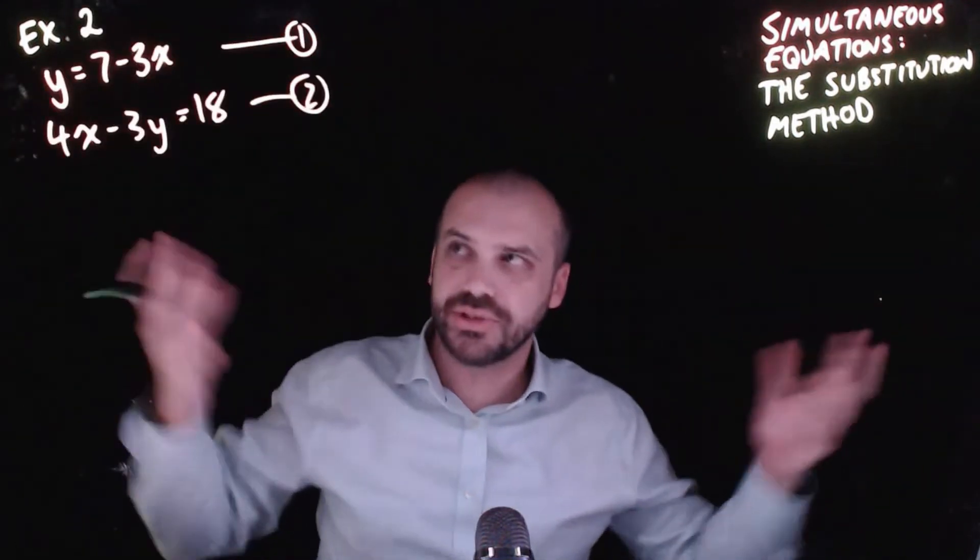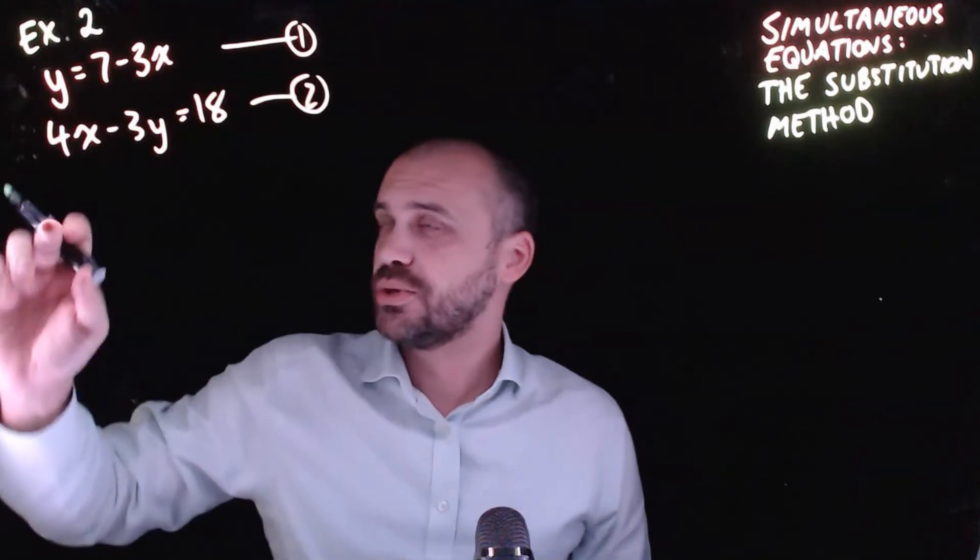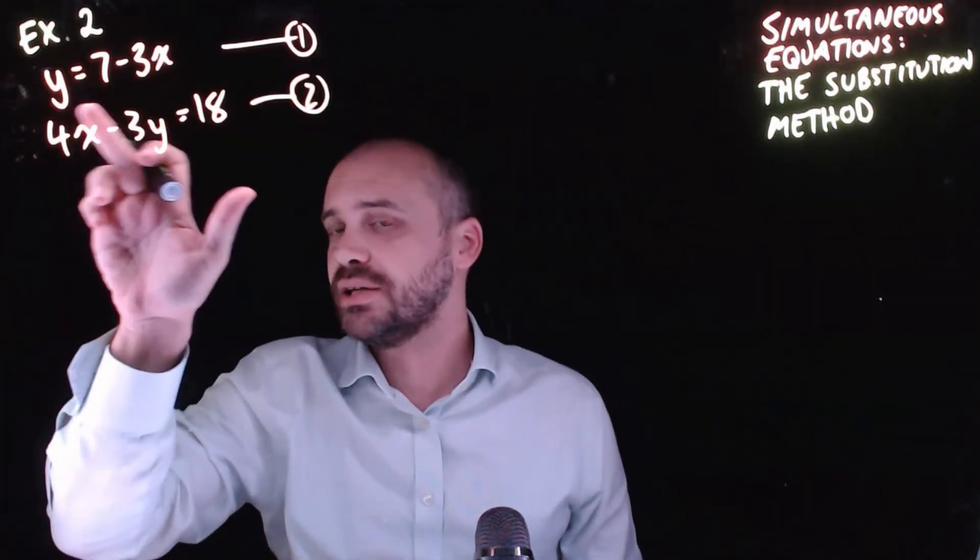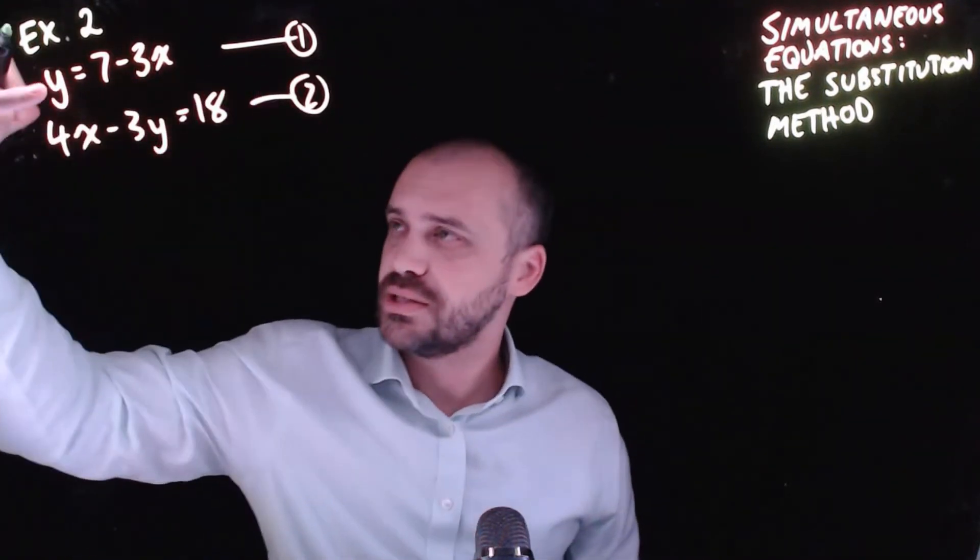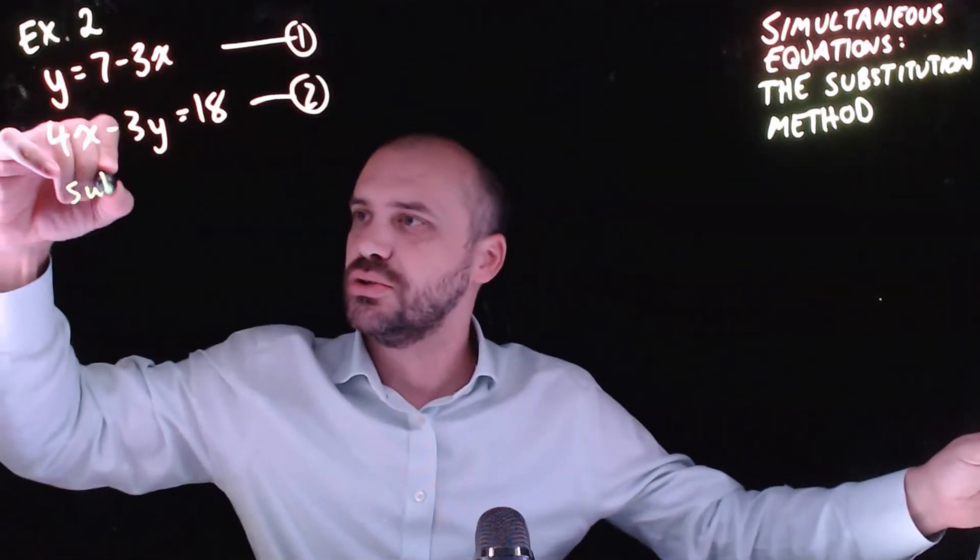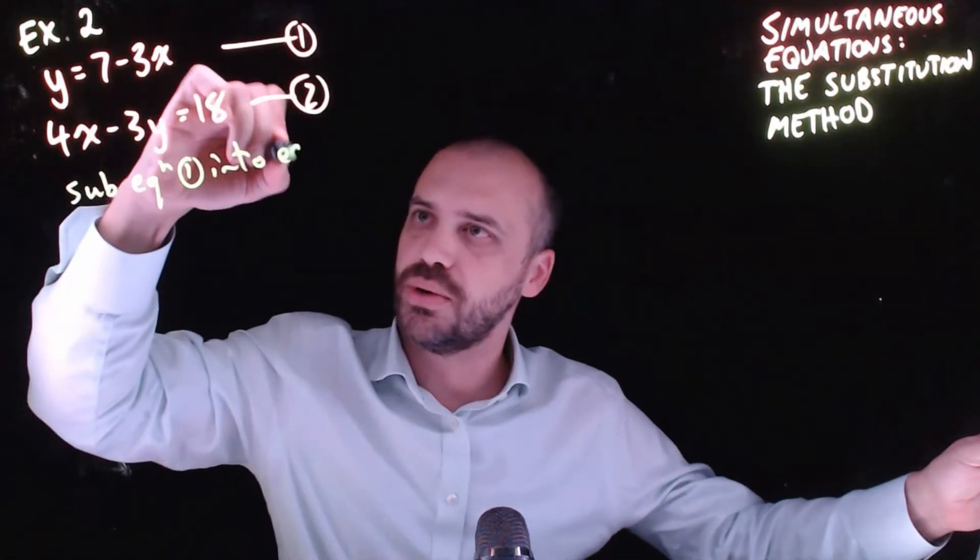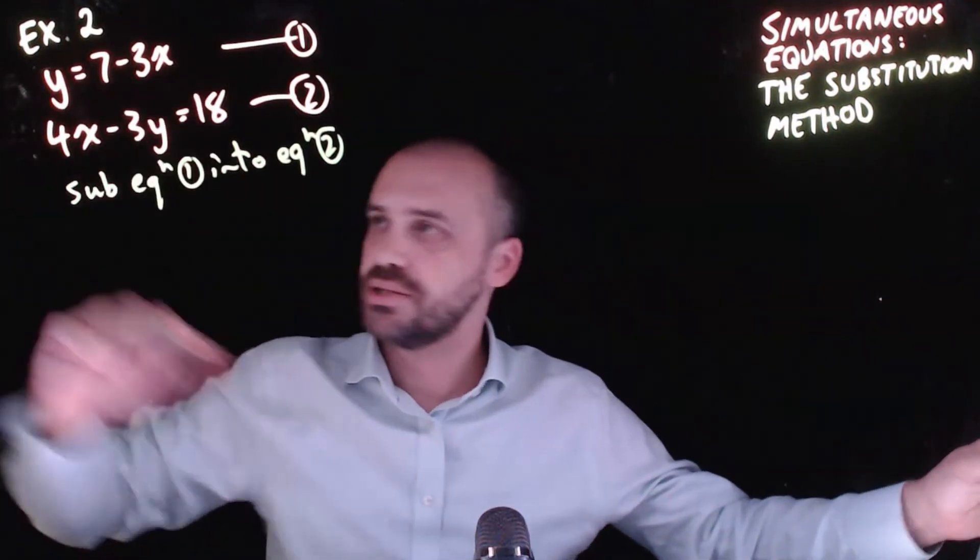This question is identical to the last one, so we're going to chew through it really fast. We've got two equations. We can see that one of these equations is written exactly as y: y = 7 - 3x. We can take equation one and sub it into equation two. So wherever we see y, we're going to put 7 - 3x.